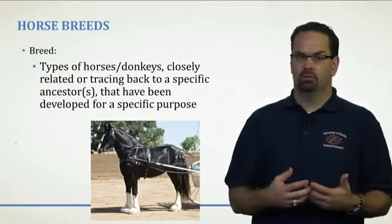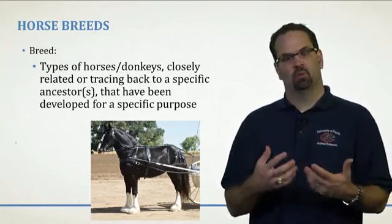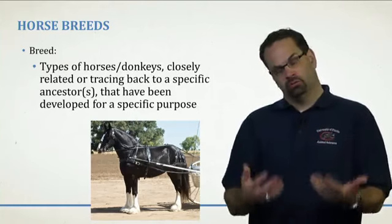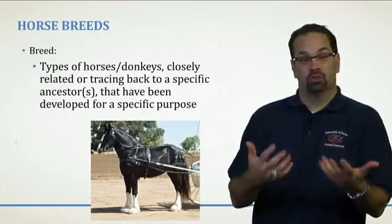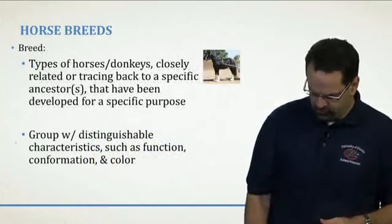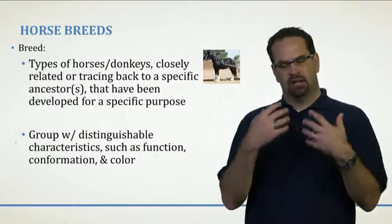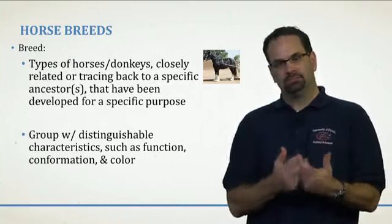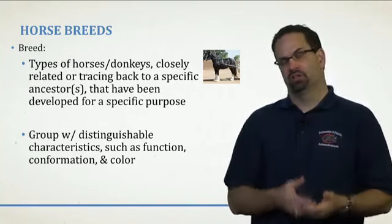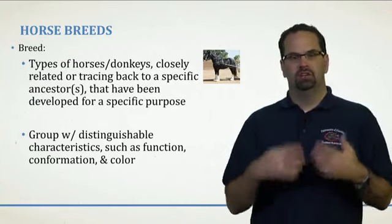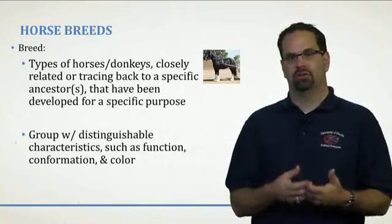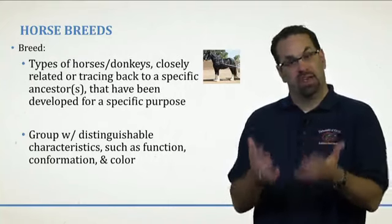And then down to the ponies, which actually had purposes like working in mines, pulling carts, or for smaller people or children to ride. They all trace back to a common ancestor. To establish a breed — which some people still are trying to do to this day — these have to be characteristics that can be genetically passed on to offspring, and they have to be unique to that breed.